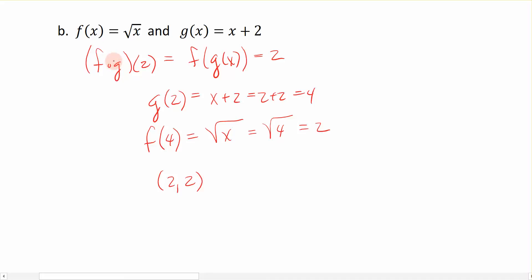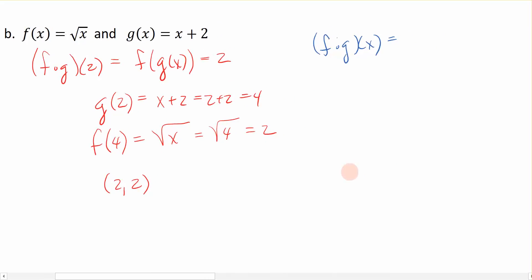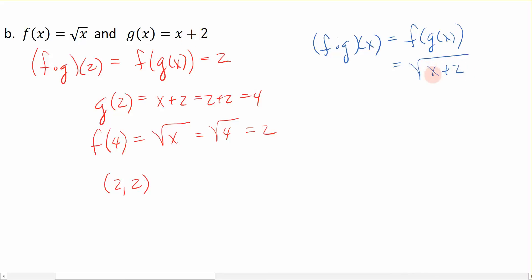Now let's come up with what that function actually is. So if I have f composed with g of x, I'm composing f of g of x. Everywhere there is an x in my f function, I replace it with the inside. So the square root of g of x, which is x plus 2. And that's my new composed function right there.